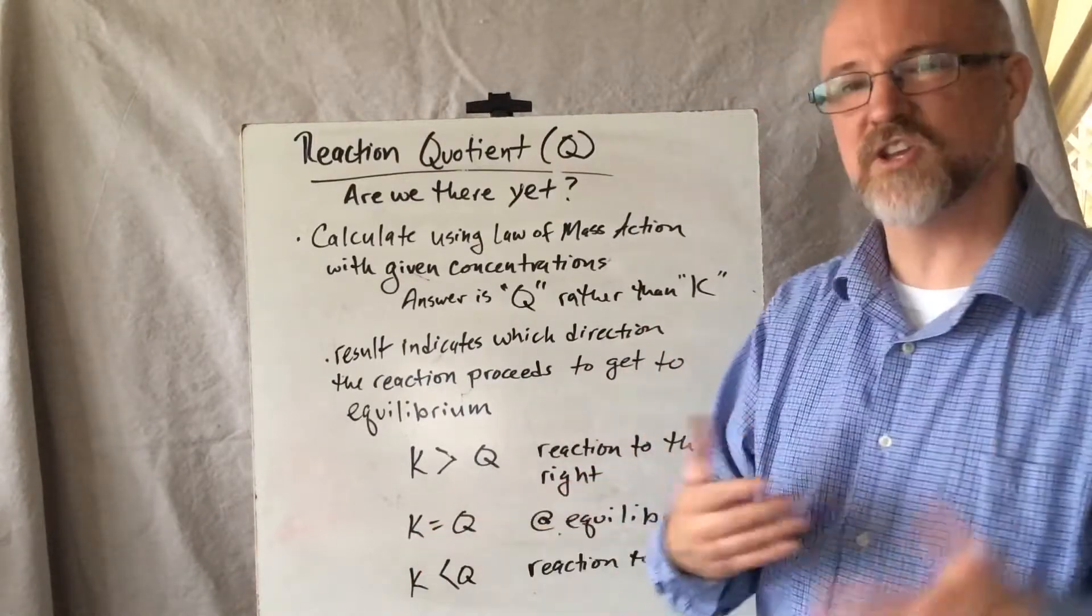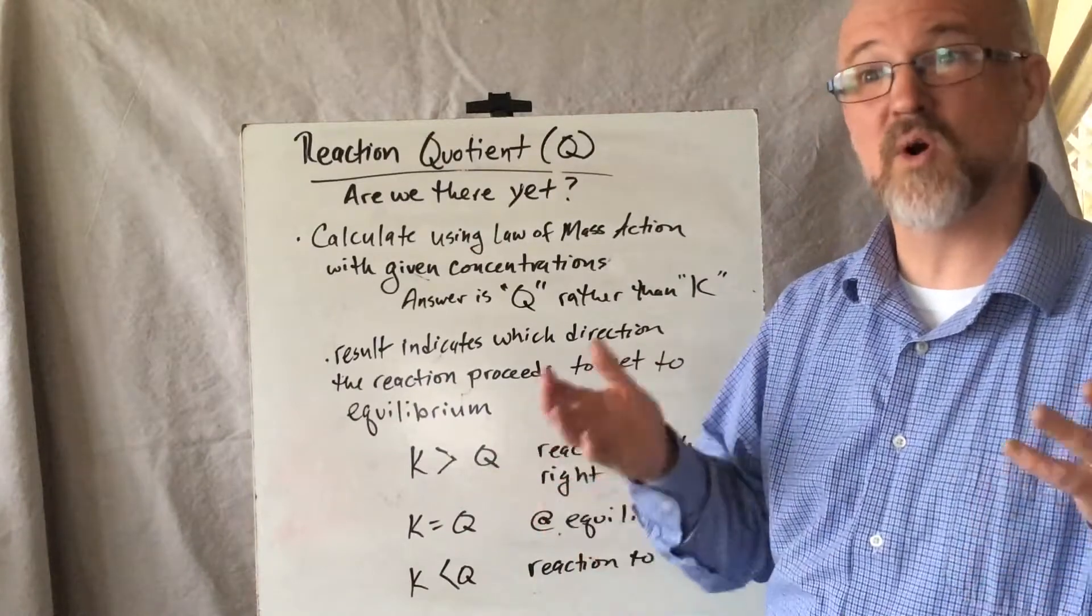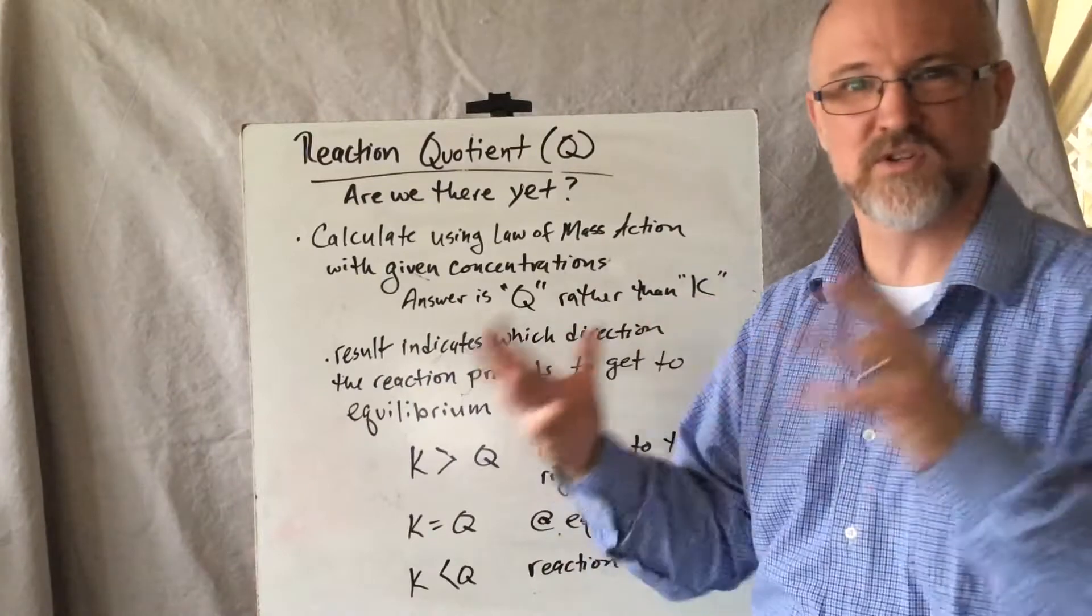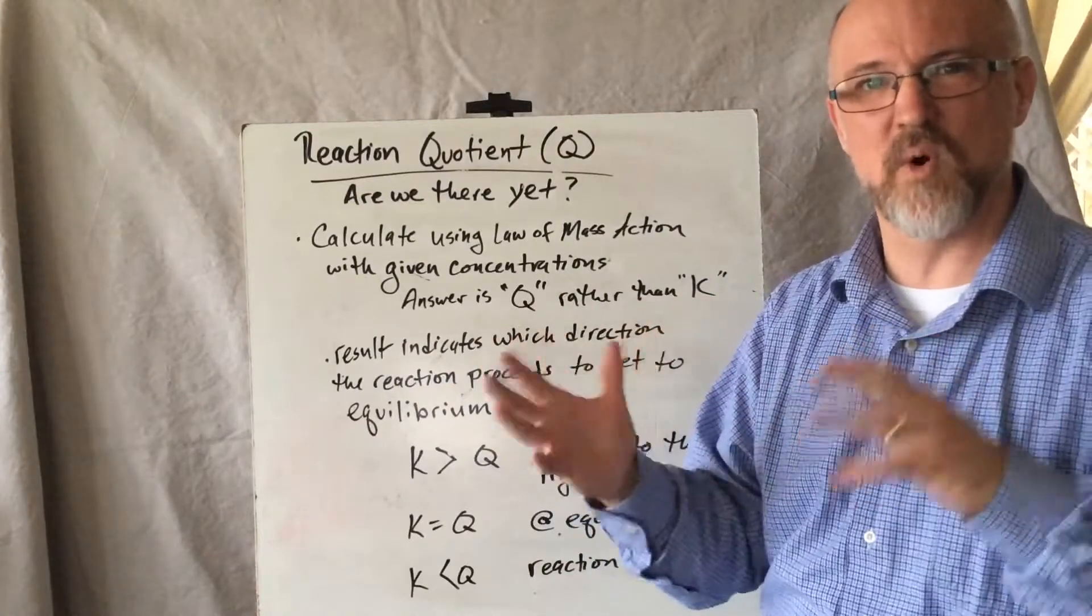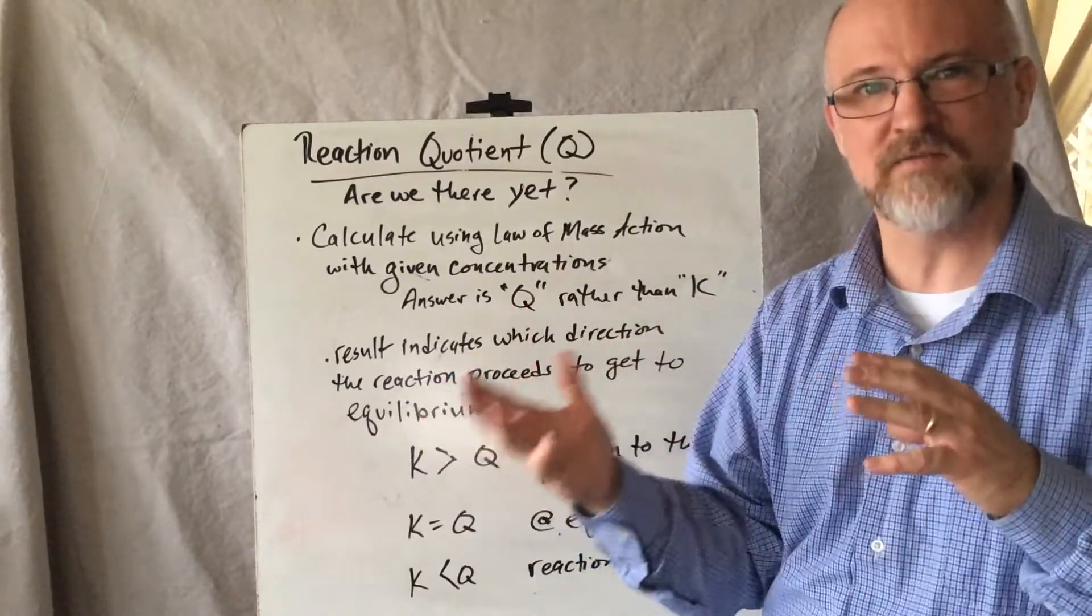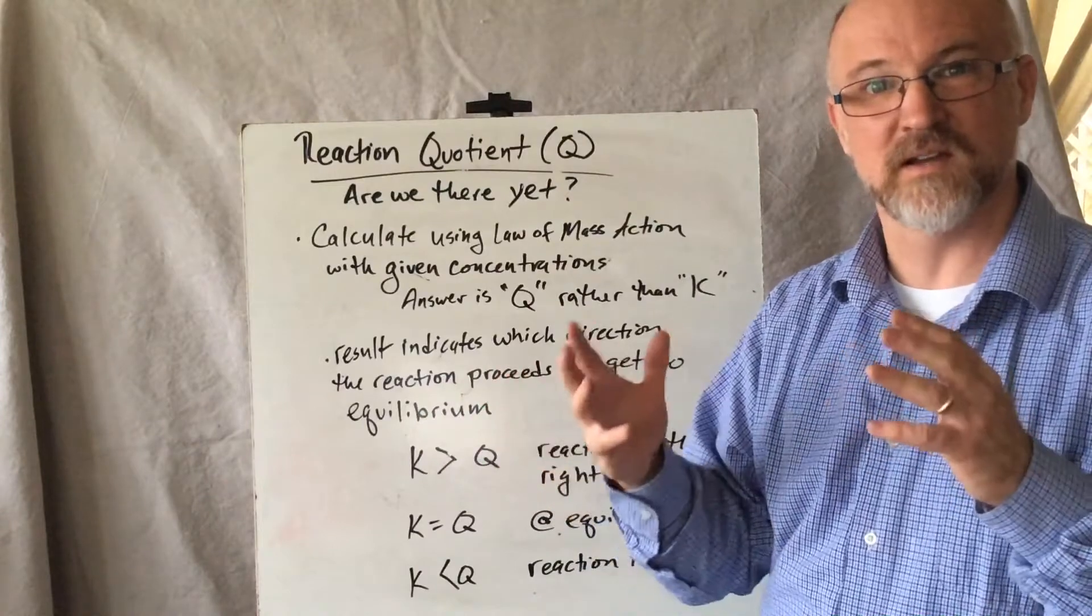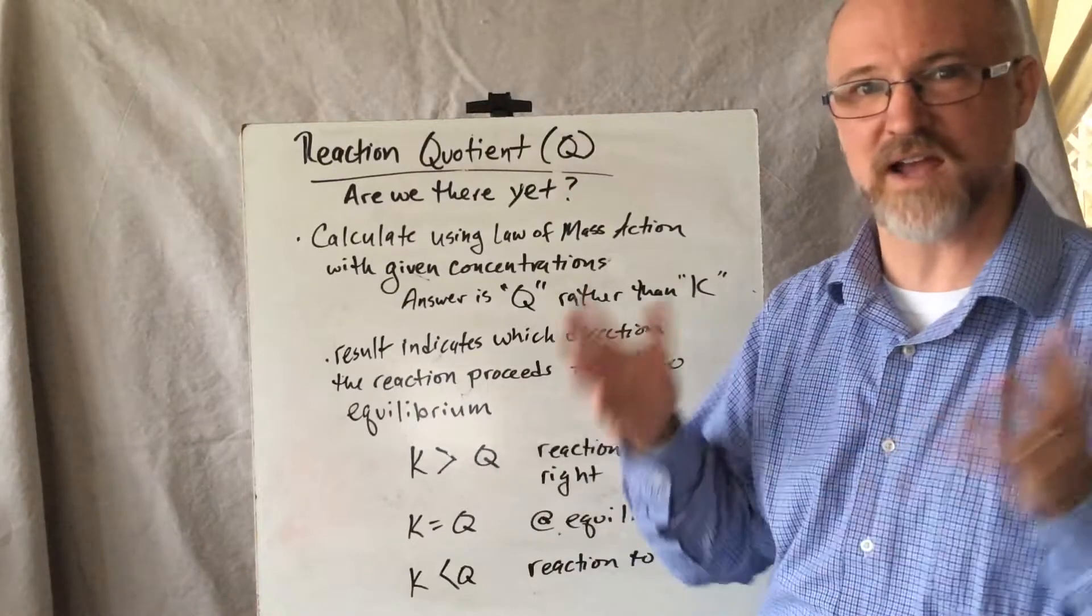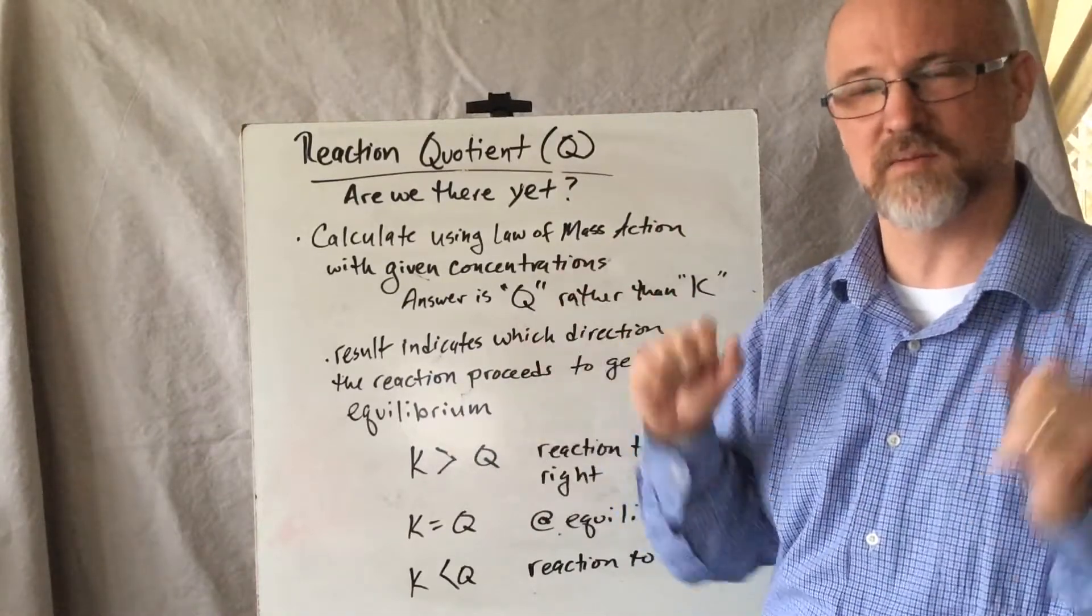If K and Q turn out to be the same answer, well, guess what? We're already at equilibrium. There's no more forward or reverse direction. There's no more going to the right or more going to the left of this reaction. For all the reactants that are turning into product, proportionately the product is turning into reactants. It's at that dynamic equilibrium state.